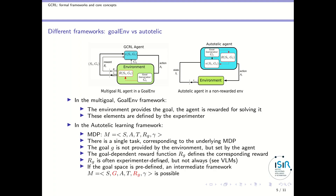If the goal space is defined in advance, you can define intermediate frameworks where the MDP contains a state space, a goal space, and a goal-conditioned reward function. So there are several possible frameworks to represent those different cases.